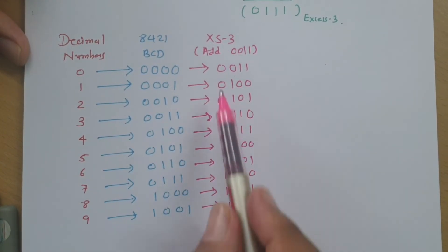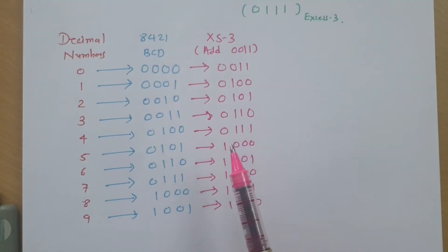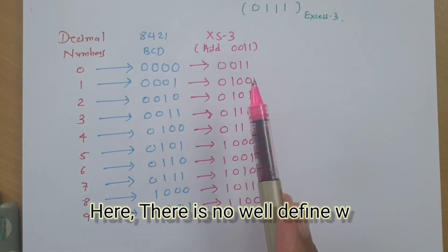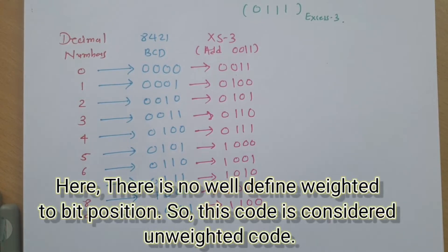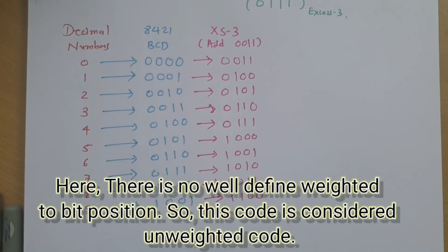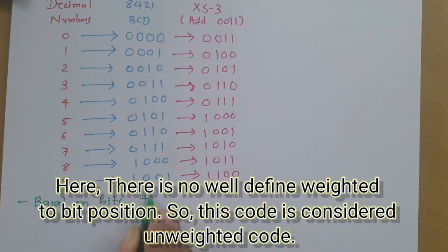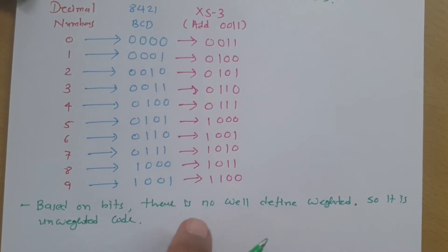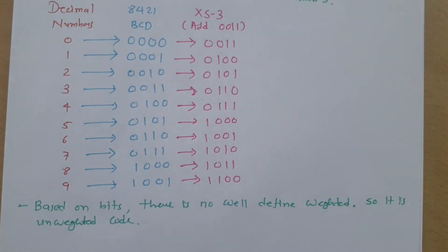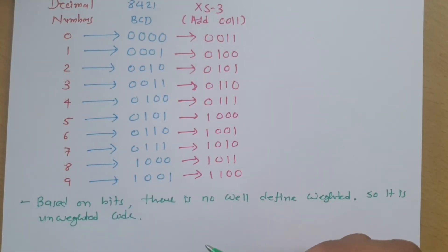From the bit positions in this table, we can clearly see that Excess-3 is an unweighted code — there is no well-defined weight assigned to the bit positions. Based on the position of the bits, we can clearly say it is an unweighted code, with no well-defined weight.